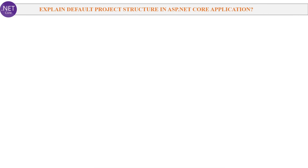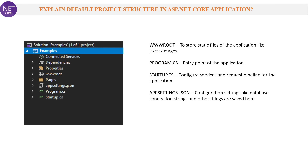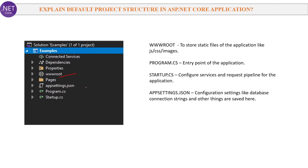Next question: Explain the default project structure in an ASP.NET Core application. By default we have 4 to 5 important files and directories. First is wwwroot, which is used to store static files like JS, CSS and images. Second is program.cs, the entry point of the application. Third is startup.cs, used to configure services and the request pipeline. Fourth is appsettings.json, used for saving configuration settings like database connection string and other things. We will discuss all these files in detail in upcoming questions.